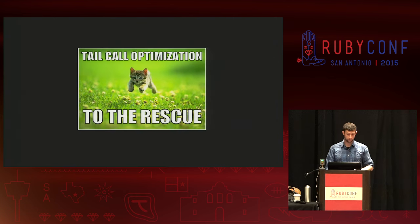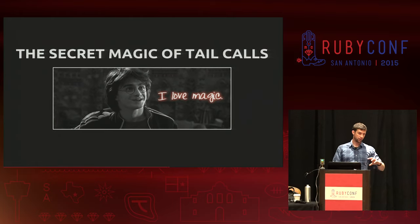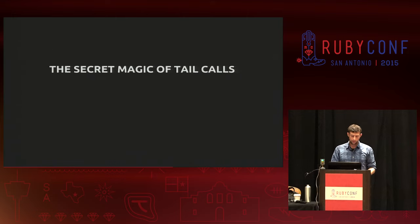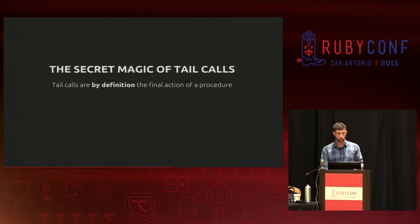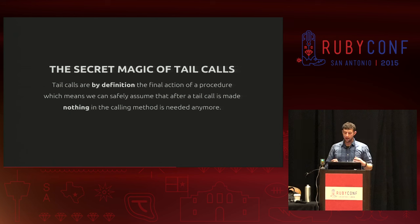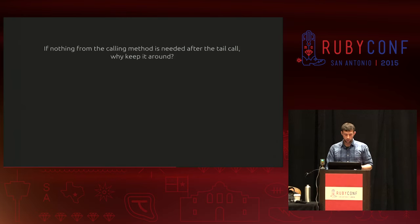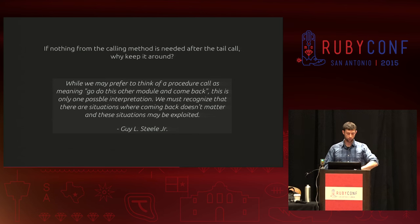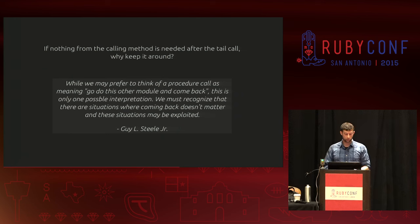On to actual tail call optimization to the rescue! A tail call is, by definition, the final action of a procedure, which means we can make assumptions about how our program will work after making that call. The most important idea we can derive is that nothing in the calling method is needed anymore. Guy L. Steele Jr., one of the original writers of the Scheme language, put it well: 'While we may prefer to think of a procedure call as meaning go do this other module and come back, that is only one possible interpretation. We must recognize that there are situations where coming back doesn't matter, and these situations may be exploited.'